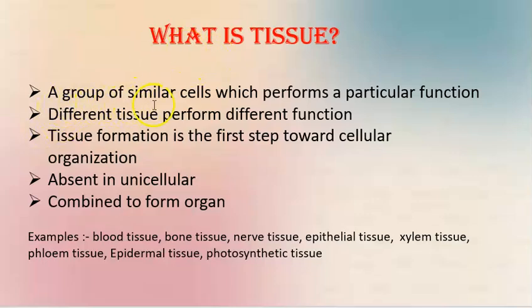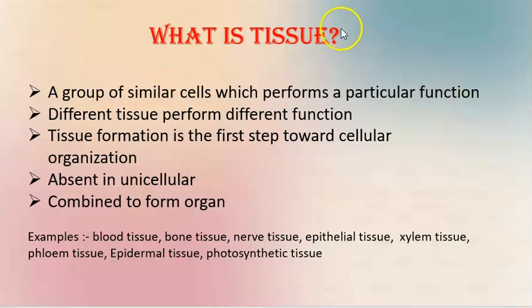A group of similar cells which performs a particular function is called tissue. This is the big group — a Salani group — and it is called tissue. We will always remember this.